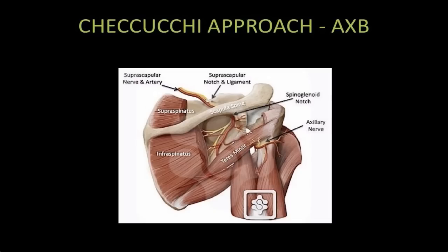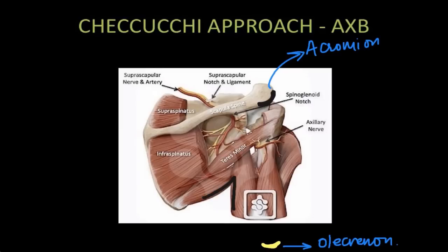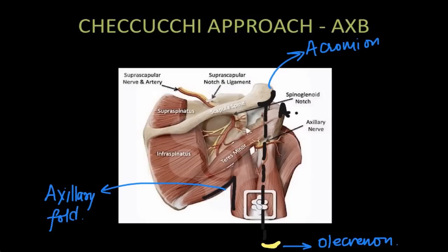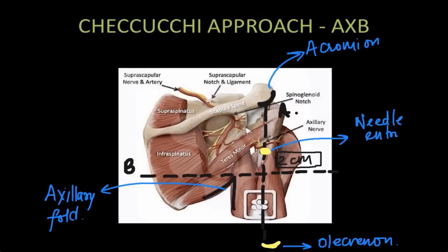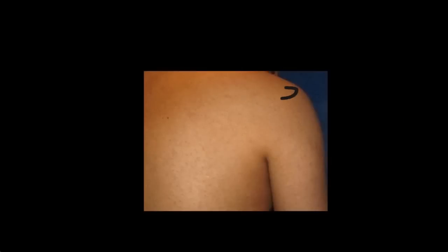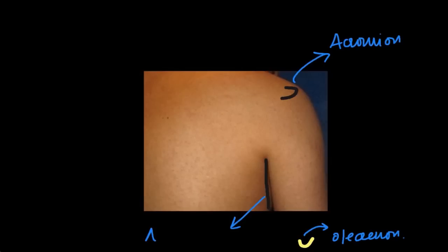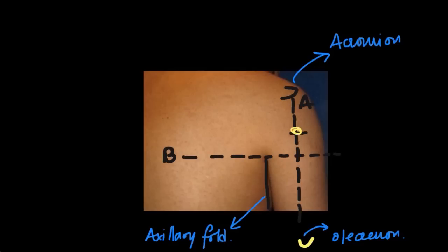In Shiguchi's approach it's not very different from Price's approach but he uses slightly different landmarks. He uses the acromion process and the olecranon as two landmarks and draws a line which passes vertically through them. Next he identifies the axillary fold or axillary crease and draws a horizontal line passing through the top of the axillary fold. Call the vertical line line A and the horizontal line line B. Two centimeters above the intersection of these two lines is the needle insertion point, which again approximately corresponds with the quadrangular space where the axillary nerve lies. In the patient you can see the acromion process and the olecranon, and the axillary fold is identified. You drop a perpendicular from acromion to olecranon as line A, draw a horizontal through the top of the axillary fold as line B, and choose the needle entry point two centimeters above the intersection of these two lines.